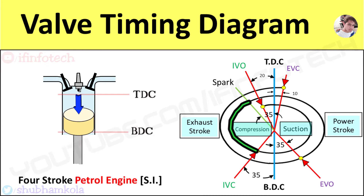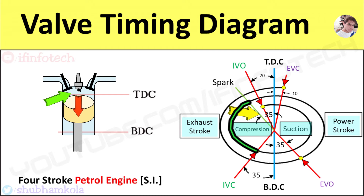Now the compression stroke will start. The charge contained in the cylinder will be compressed, so the pressure and temperature of the charge increases. A mixture of petrol and air is ignited by an electric spark at an angle of 35 degrees before the TDC position of the piston.